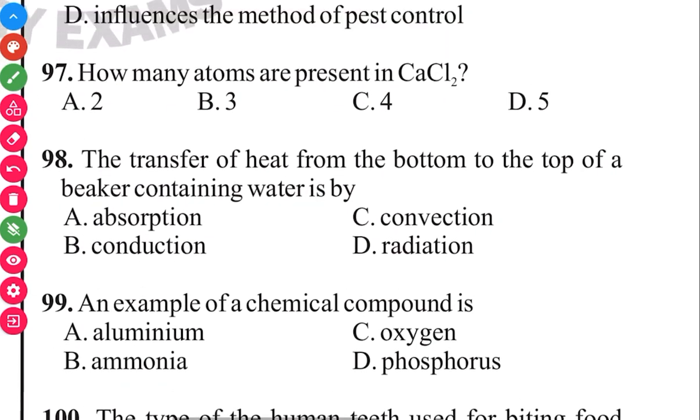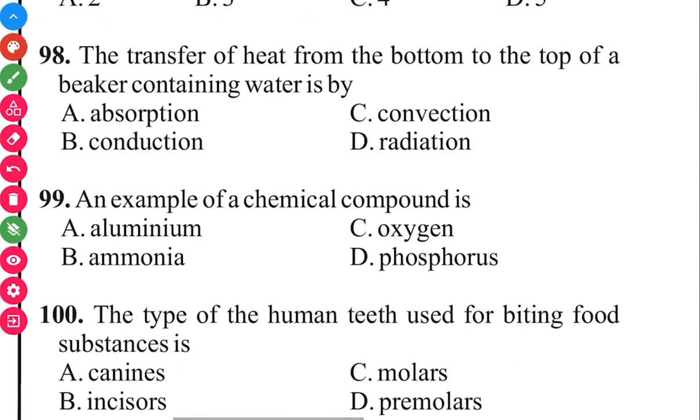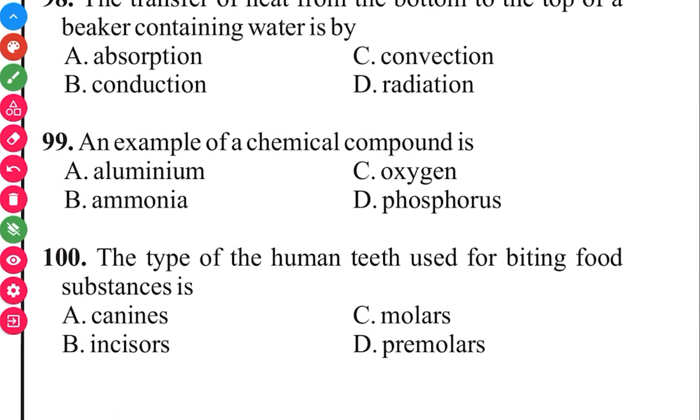Question 99. An example of a chemical compound is ammonia. The answer in 3, 2, 1, ammonia.